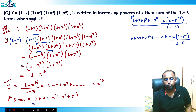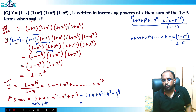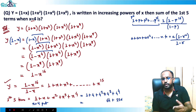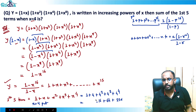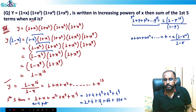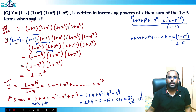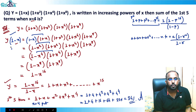We put x = 4: the terms are 1, 4, 16, 64, and 256. Adding them: 1 + 4 = 5, + 16 = 21... actually: 1 + 4 + 16 + 64 + 256 = 341. So 341 is the answer for this question.